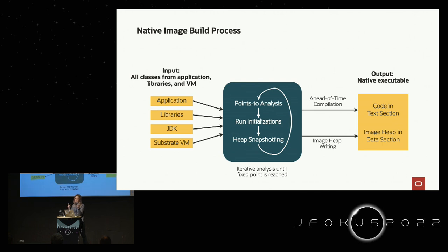Native image eliminates all non-essential code so you get a slim, lightweight binary. It performs static analysis, runs initializations, finds all reachable code, and puts only what's essential into the produced executable. What's also interesting is heap snapshotting — at the image build process it builds the heap so that when your application actually starts, it comes with a pre-populated version of the heap.